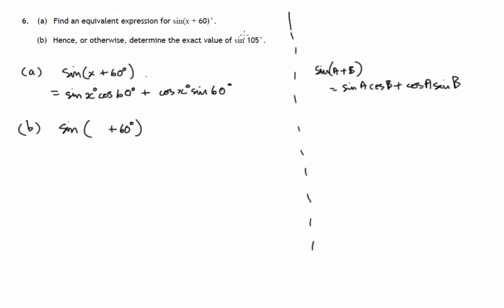Well, what do we add to 60 to get 105? It's 45 degrees. And you should be thinking, oh, exact values - we know the sines and cosines of 45s and 60s. So let's use this result: sin(45°)cos(60°) + cos(45°)sin(60°). And we need to know what the exact values of these results are.